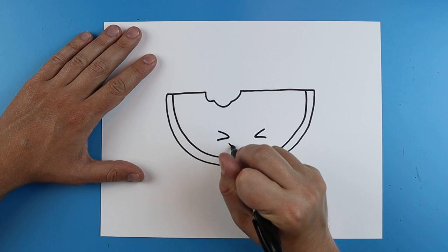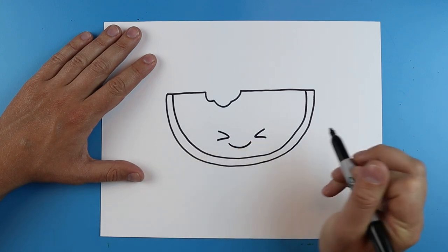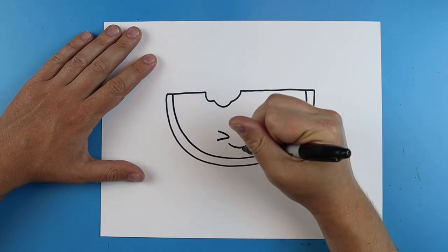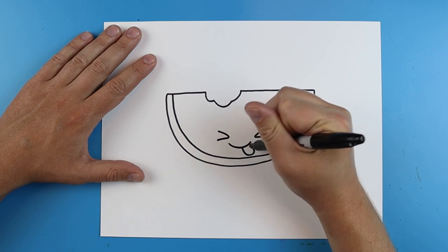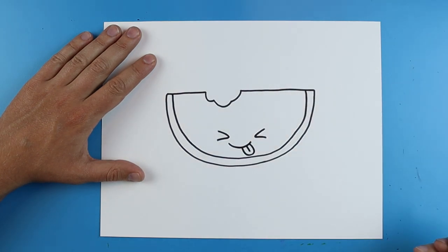Then right here I'm going to give it a little smiley face. And then I'm just going to add a little tongue sticking out so the line that curves down with a little line going through it.